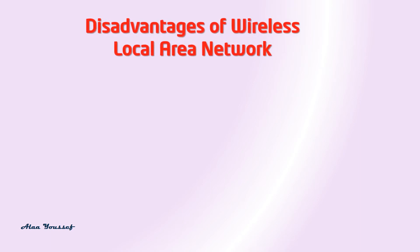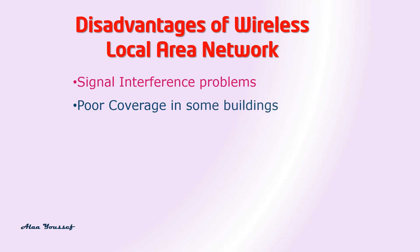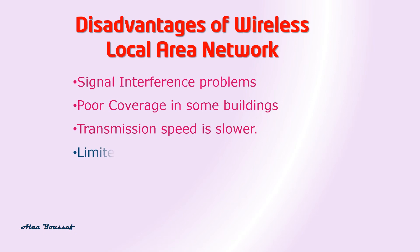Disadvantages of Wireless Local Area Network. Signal interference problems: wireless signals may suffer from other electronic equipment interference that could lead to poor communication. Poor coverage in some buildings: for example, in structures built using steel reinforcing materials, it may be difficult to pick up the radio frequencies used. Transmission speed is slower: data transfer around a wireless network is much slower compared to a wired LAN. Limited coverage: wireless signal range is limited. Security is an issue: wireless transmission is more vulnerable to attack by unauthorized users, so data encryption techniques are needed.